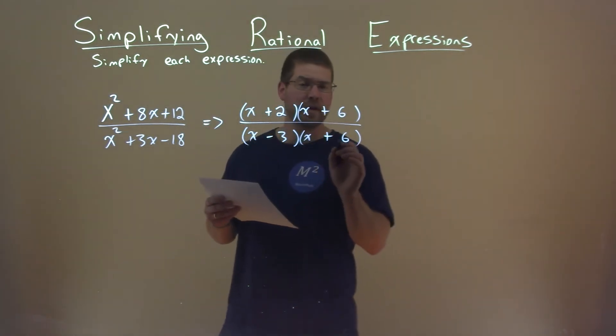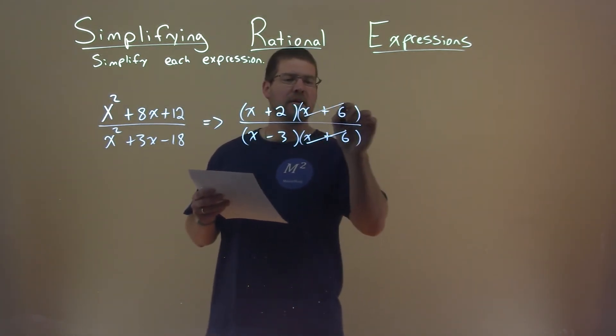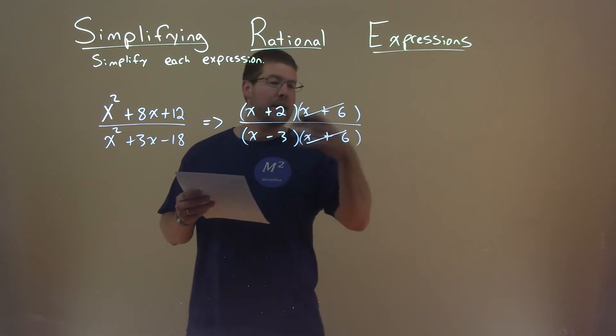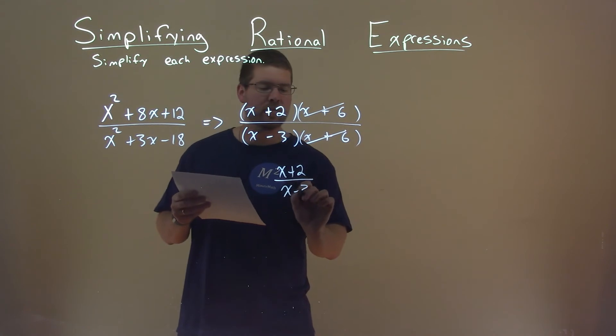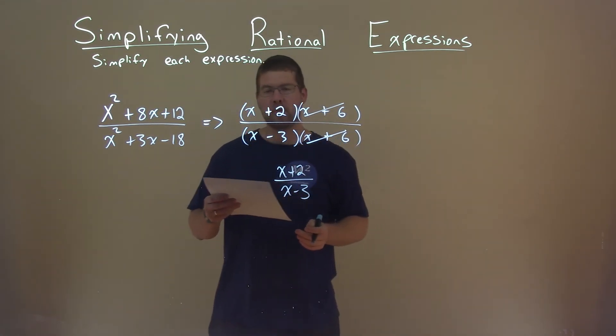So, hopefully you can see x plus 6 here is duplicated. Meaning we can cancel them out, and we're left with x plus 2 over x minus 3, and that is our final answer.